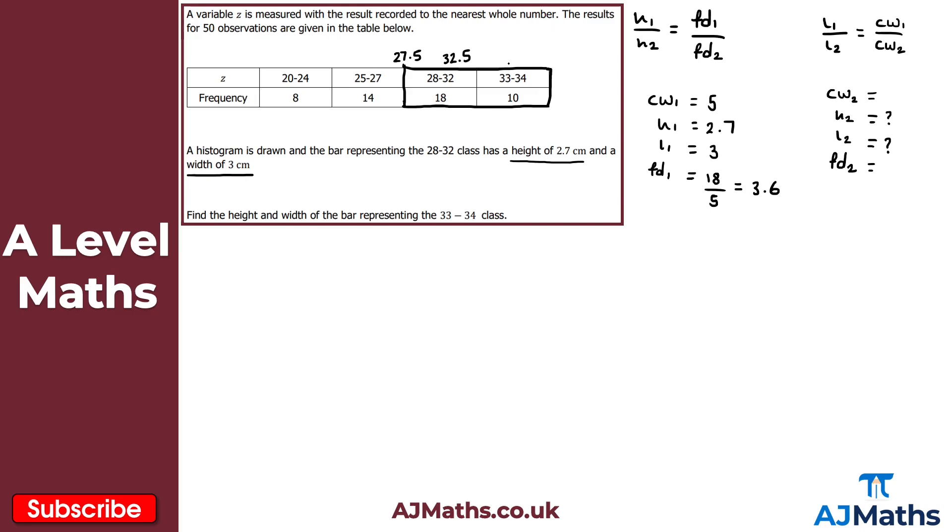We need the class boundaries here. So my lower class boundary would be 32.5. And my upper class boundary would be 34.5. So my class width here would be 34.5 minus 32.5, giving us 2 there. So the class width for the second class here is 2.